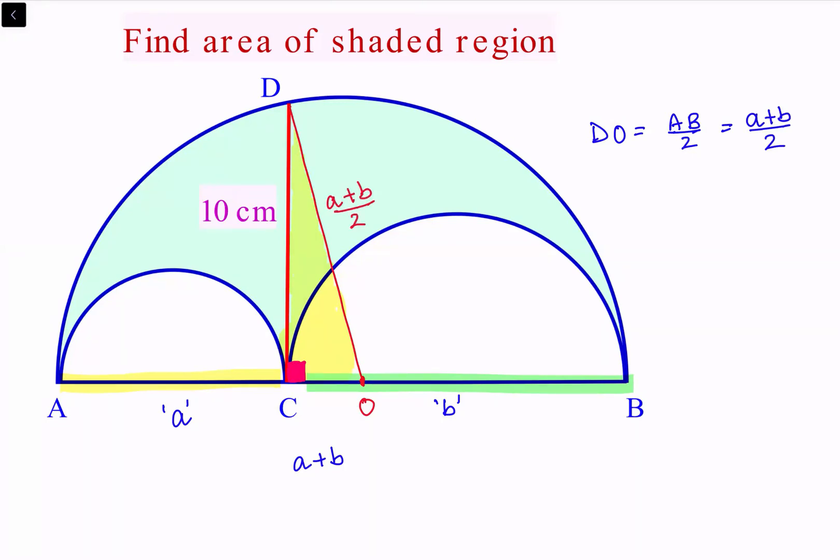Now we have to find the length CO. CO is BC minus BO. BC is B units, and BO is the radius of the bigger circle, which is (A+B)/2. Solving it, the length CO is (B-A)/2.